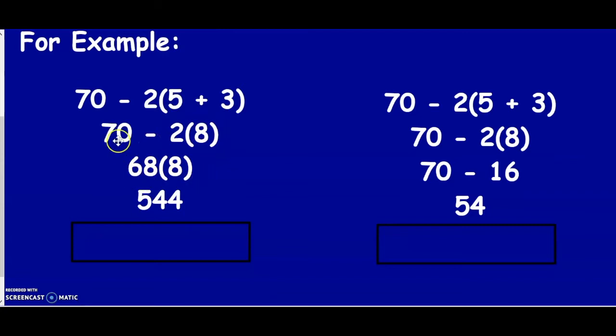On this problem, they subtracted before they multiplied, which gave them the answer of 544, which is incorrect. On the right-hand side, they still did the parentheses correct. 5 plus 3 is 8. Now they multiplied 2 times 8, which gave them 16, and then subtracted. So they performed the operations in the correct order, and that gave them the correct answer. It is very important that you complete the operations in the correct order in order to get the correct answer.